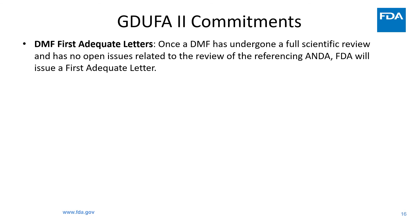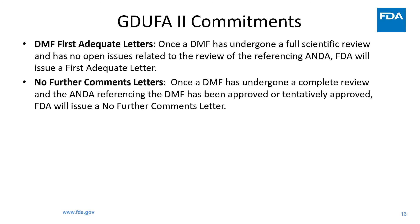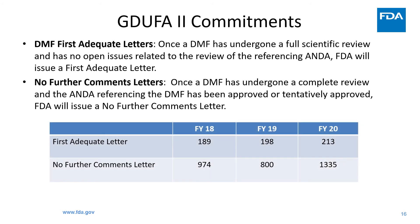I am now going to share two other statistics: first, adequate letters — FAs — and no further comment letters — NFCs. These numbers are not Congressionally reported. An FA letter is issued once the DMF is undergoing a full scientific review and found adequate for the first time, and FA letters are only issued when the DMF is referenced by at least one ANDA. An NFC letter is issued to the DMF when the ANDA referencing the DMF has been either approved or tentatively approved. We have seen an increase in the number of FA and NFC letters issued for the last three years. The current timeline for FA letters is 30 days and for NFCs it is a little bit longer.